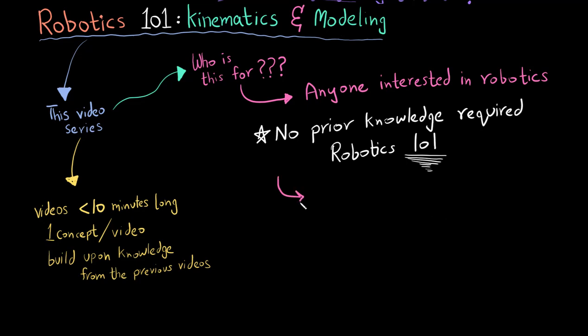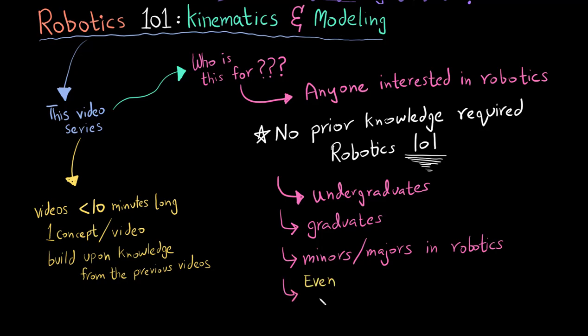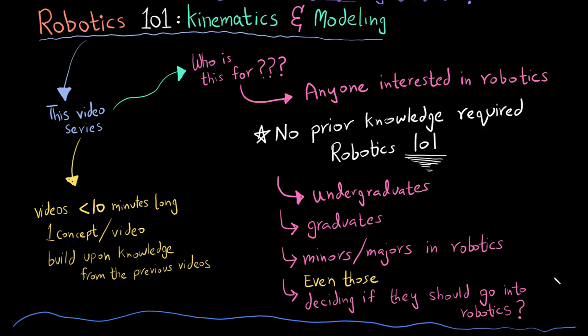To be more precise, this video series is for both the undergraduates and the graduates. In university there are some courses that are open to be taken by both the graduates and the undergraduates. This video series is just like that. It would do good for those who are doing either the majors or minors in robotics, and even for those who are just deciding if they should go into the world of robotics or not. So just to reiterate, this course is for anyone who is interested in robotics.